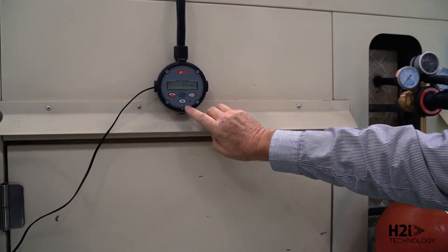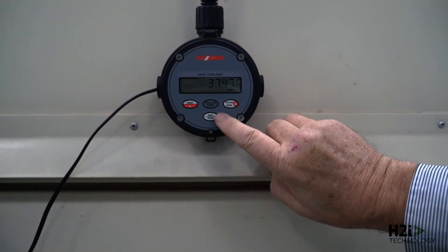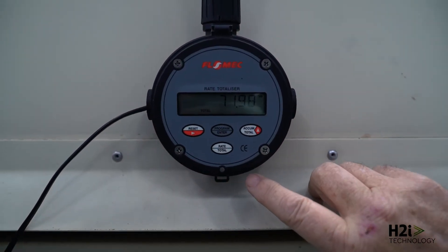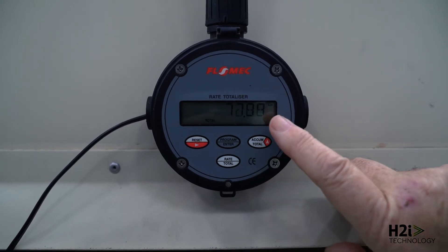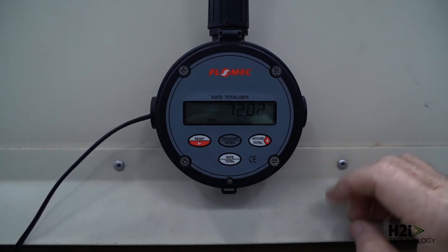At the end of the test, we can actually see, once we stop the test, to 0.1 of a liter how much fuel has actually been used, and that gives us very accurate and repeatable results.